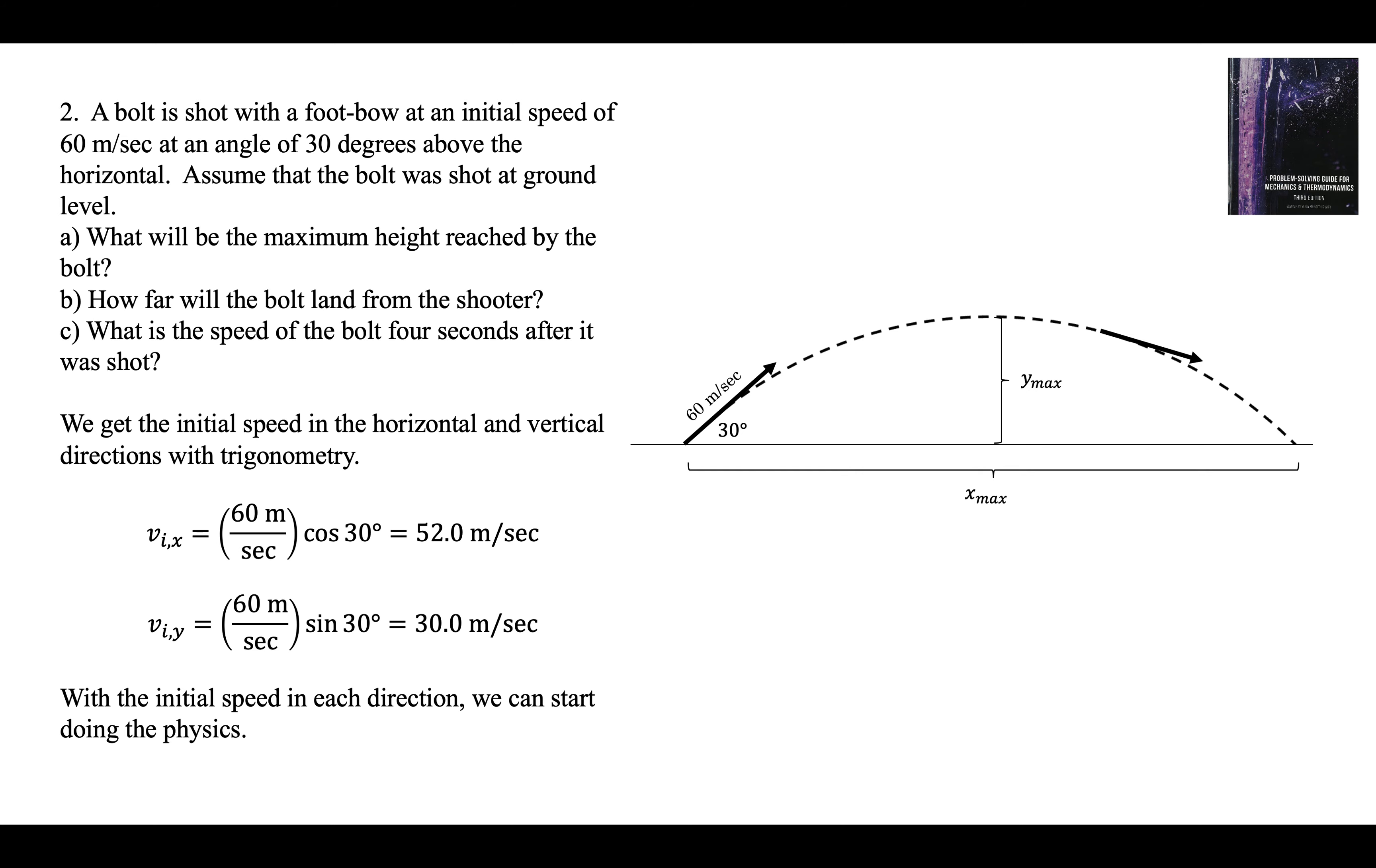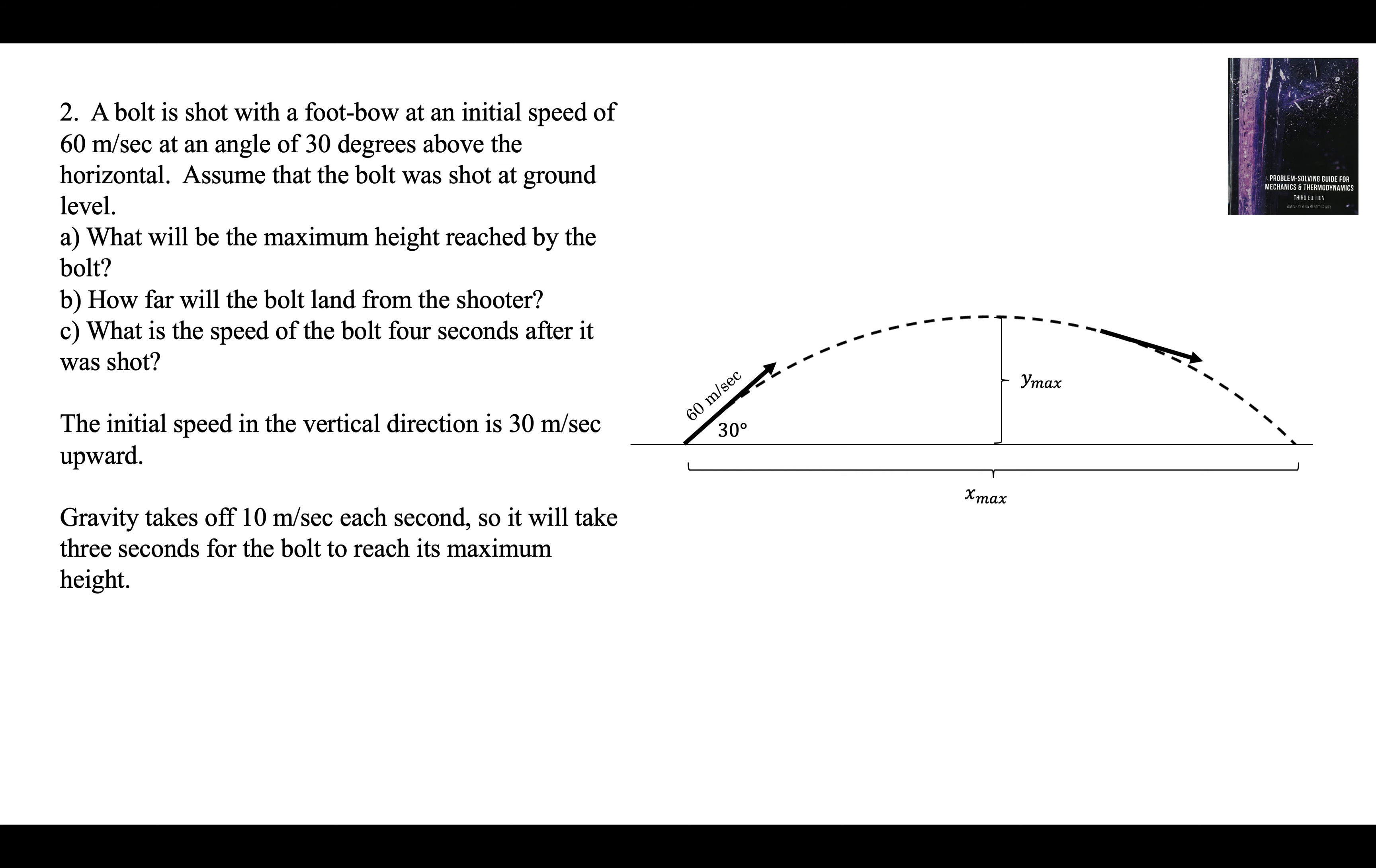Let's do some physics. Initial speed in the y direction, 30 meters per second. Gravity takes off 10 meters per second each second. If it starts at 30, it's going to take 3 seconds for the bolt to reach the maximum height. It started off at 30.